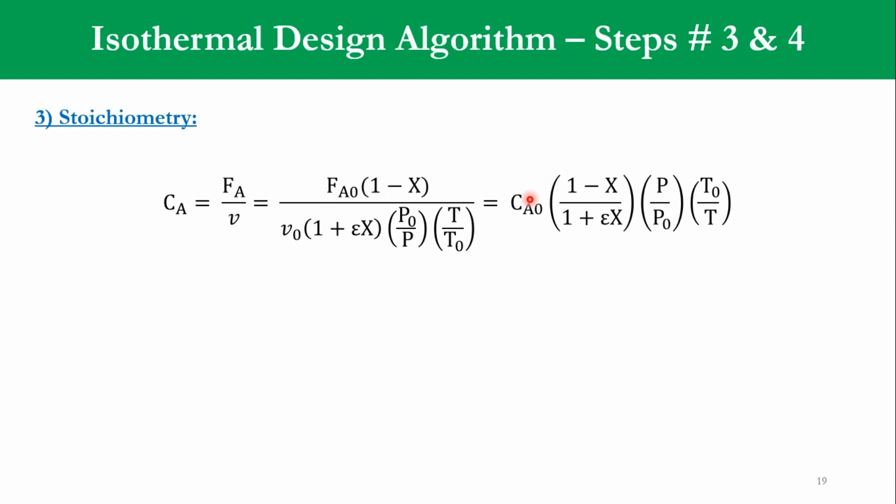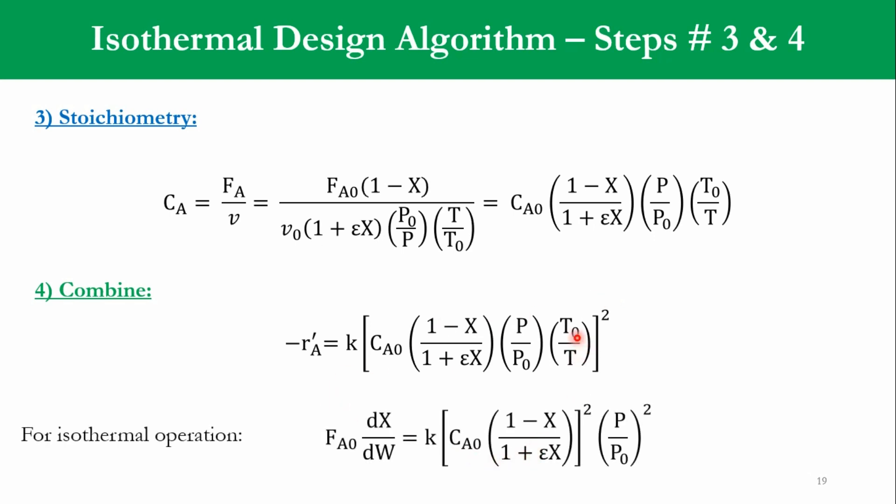So FA0/v0 is CA0·(1-X)/(1+εX)·(P/P0)·(T0/T). Once we combine -r'A = k·CA², that CA term, which CA is equal to this one, whole square. And for isothermal operation we say T = T0, so this is cancelled out. So what we get: -r'A = FA0·dX/dW, that is equal to k·[CA0·(1-X)/(1+εX)]²·(P/P0)². So that is the overall representation of this equation, and as you can see, -r'A = FA0·dX/dW.